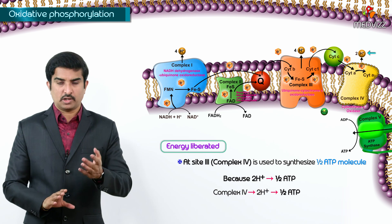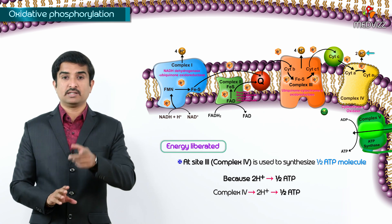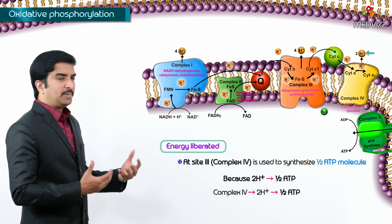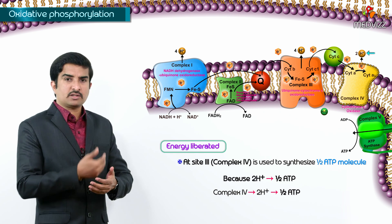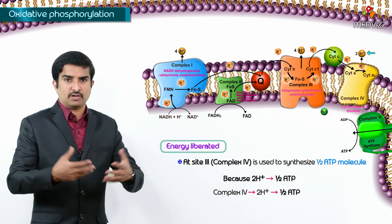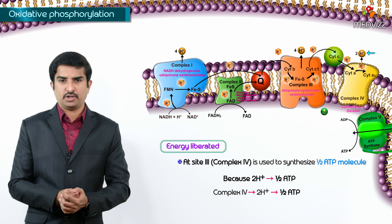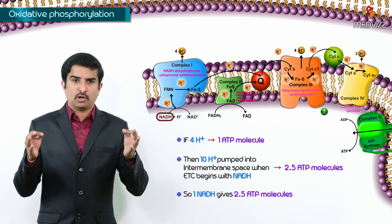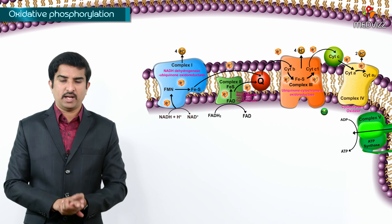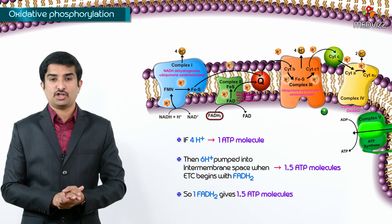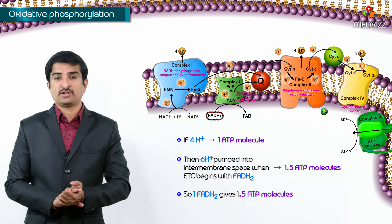Now let us talk about site 3, which is complex 4. Complex 4 is used to synthesize only half an ATP molecule because it is responsible for pumping only two hydrogen ions into the intermembrane space. When these two hydrogen ions are driven back into the mitochondrial matrix by the electrochemical gradient, only half a molecule of ATP is produced. That is why when one NADH molecule enters the respiratory chain it produces 2.5 molecules of ATP, and when one molecule of FADH2 enters the respiratory chain only 1.5 molecules of ATP are produced, as site 1 of energy liberation is bypassed.